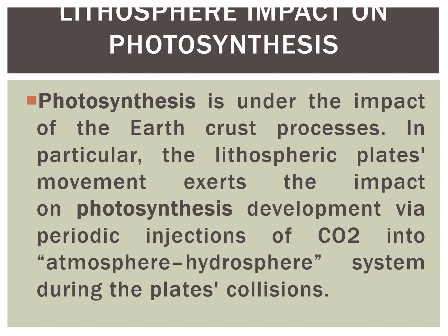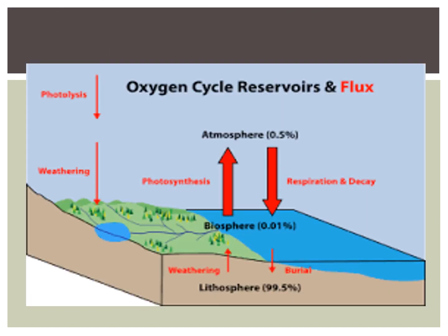When these plates collide, what happens is that the movement of the plates in the lithospheric region causes carbon dioxide to be released into the air, into the atmosphere. Then from the atmosphere, it is captured by the plants for the process of photosynthesis. This slide gives a diagrammatic explanation of the role of the lithosphere in photosynthesis, as discussed in the previous slide.